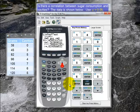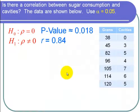Let's go back to the PowerPoint. Here's the PowerPoint. Recall that our p-value was about 0.018 and our correlation was equal to 0.84.